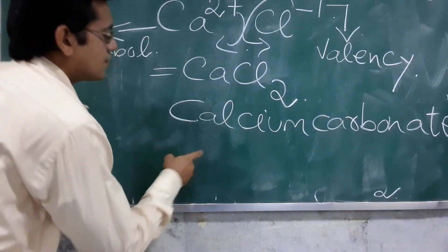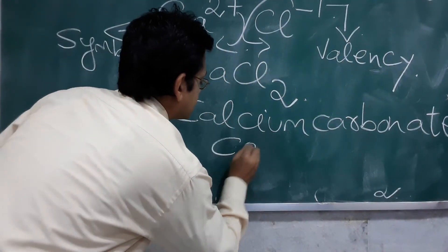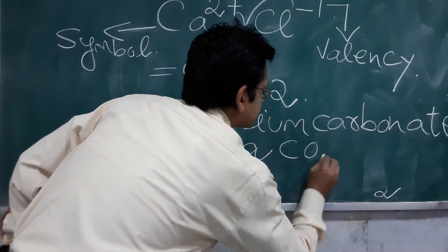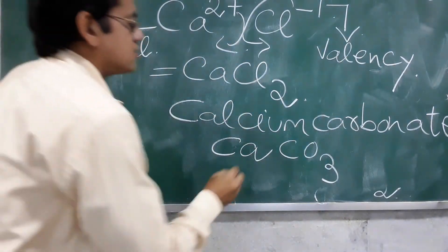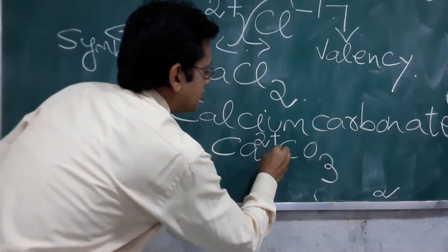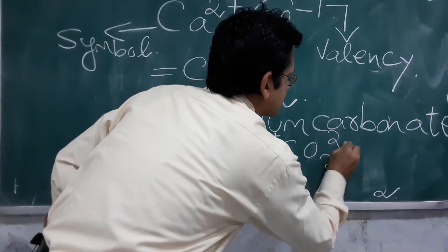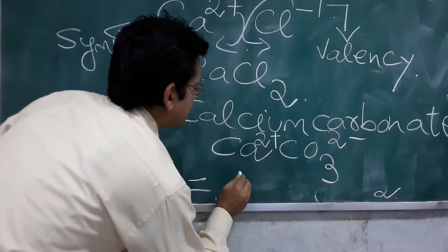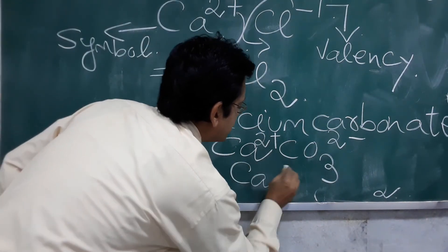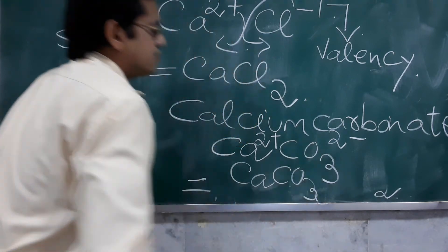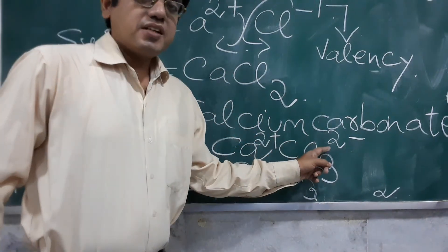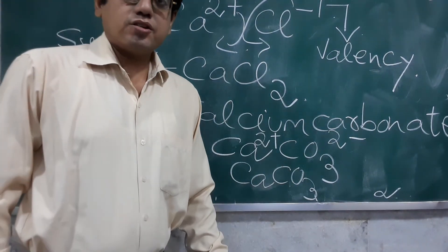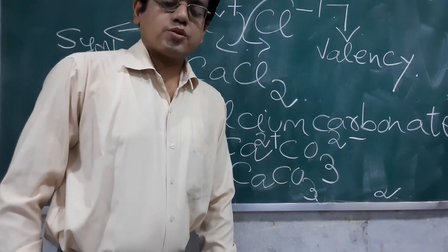Understood? Calcium — and the symbol of carbonate. So applying the valency and the criss-cross method, this becomes CaCO₃. When the valency is the same, it gets cancelled, and it becomes CaCO₃. That's all for today — thank you so much.